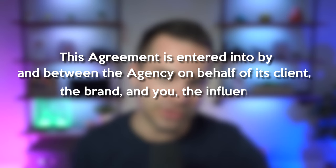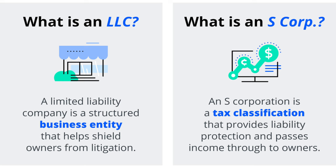Number one: signing the agreement as the wrong party. There are two main places on sponsorship agreements where you are referenced — usually in the very first paragraph where it says something like, 'this agreement is entered into by and between the agency on behalf of its client, the brand, and you, the influencer.' You need to make sure that the entity they're referencing is correct. If you have a legal structure for your creator business, like an LLC or an S-Corp, then that needs to be listed as the party and signatory instead of your name. The main reason why relates to you getting paid — so if you were about to click out of this video, stop it.